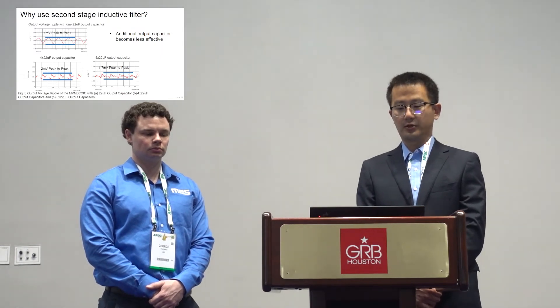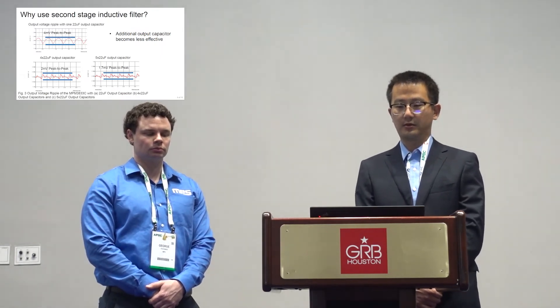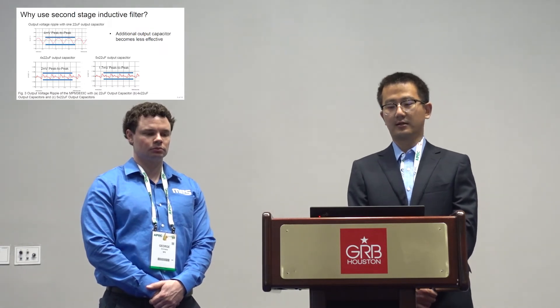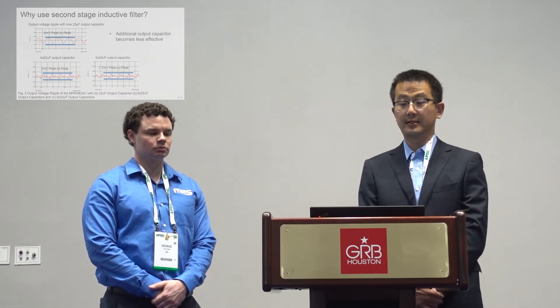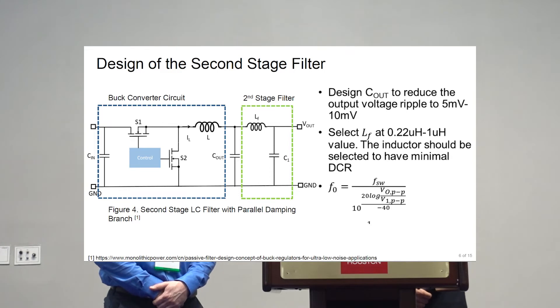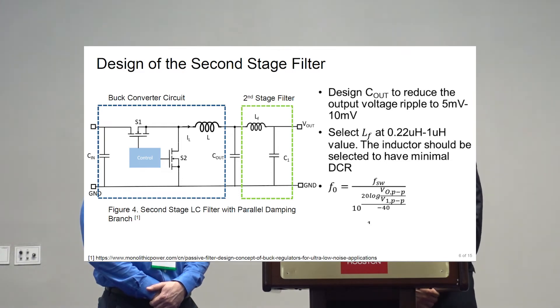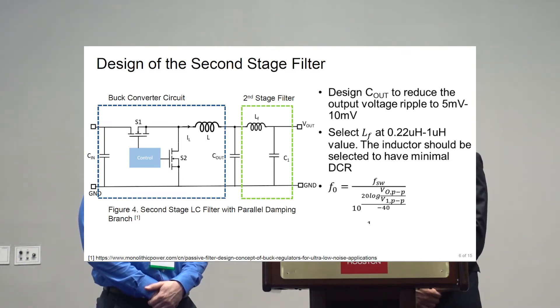With this formula, once we know the selected inductor value, we can easily calculate how much capacitance is required for C1. Additionally, the second stage filter is an LC filter, which is a second-order system, and this system can potentially introduce ringing.